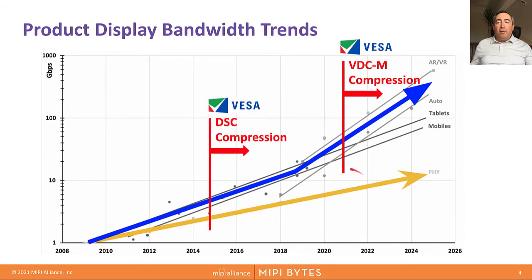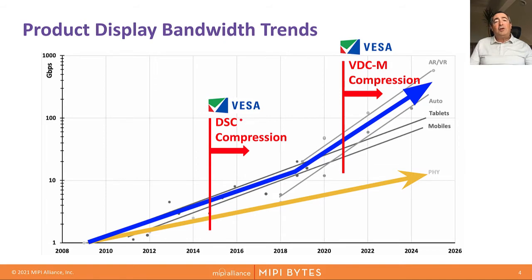The first VESA video compression standard, VESA DSC, was released in 2015. The MIPI Alliance was the first organization to adopt the use of DSC inside its transport standard, MIPI DSi. DSC has been widely adopted over the last six years and is now commonly used in many consumer products.